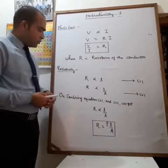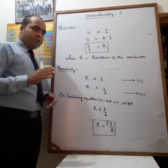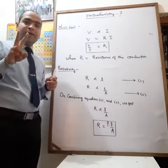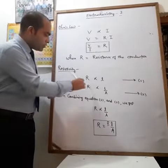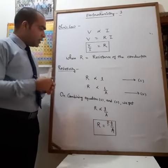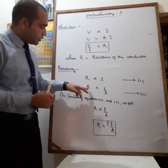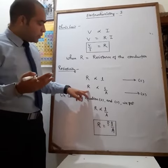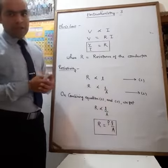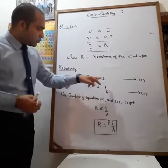Next we will introduce the term resistivity. We know very well that the resistance of any conductor depends upon only two factors. The first one: the resistance is directly proportional to the length of the conductor. And the resistance of any particular conductor is inversely proportional to the cross-sectional area. This is equation number one, this is equation number two.